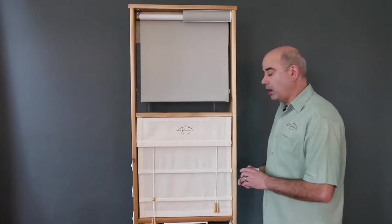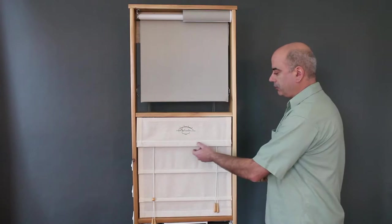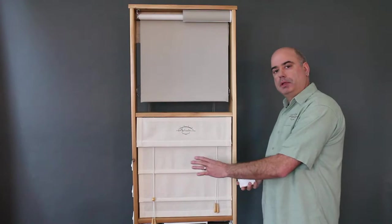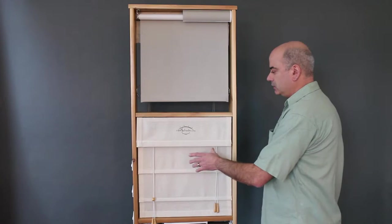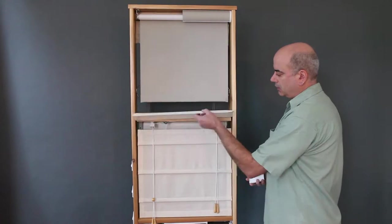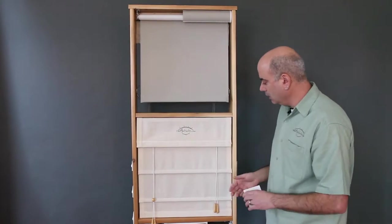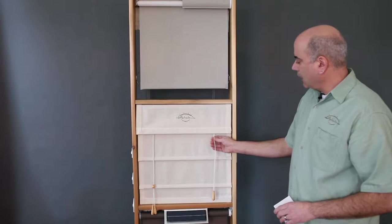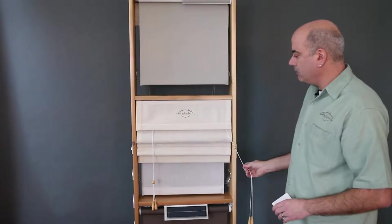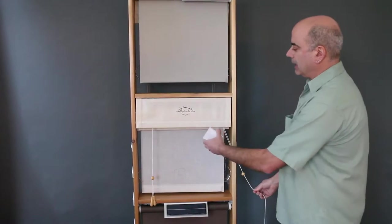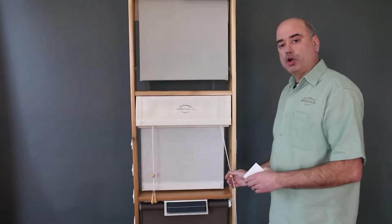Next we're going to feature in our Happy Shade Roman line, our chemical-free hemp standard Roman operating system. This system features a six inch valence that covers the operating hardware, allowing for the operating cord to lift the shade from the bottom up and stack the shade below the valence.